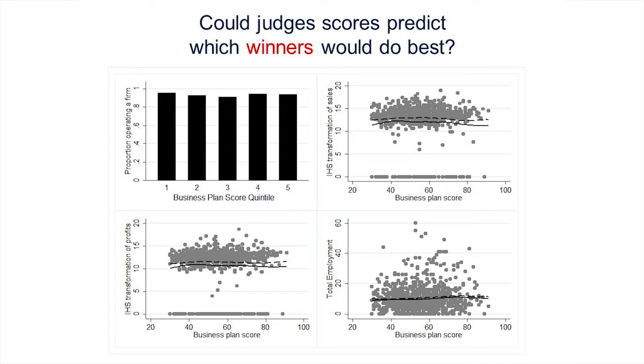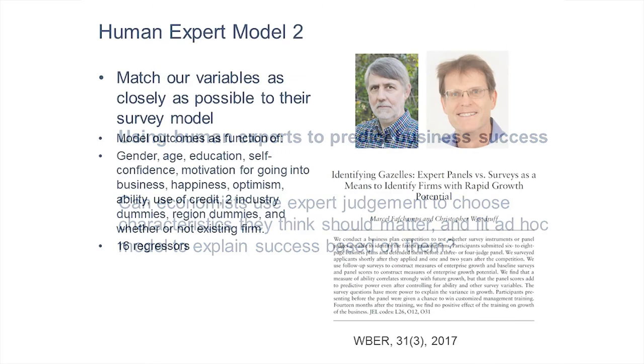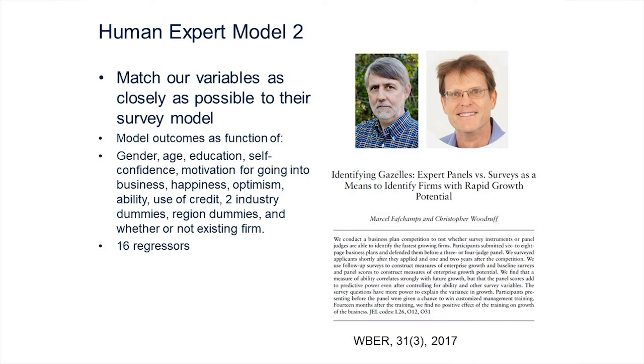So one group of humans doesn't do well — let's try economists. Can economists use what they know from the literature to predict who's going to do well? I looked at a model from Chris Woodruff and colleagues, fitted on Ghana data, which chose characteristics that make sense from the literature — an ad hoc model with about 16 regressors, no model selection criteria, applied to Nigeria.